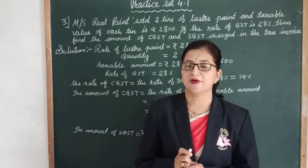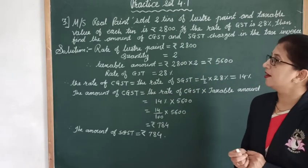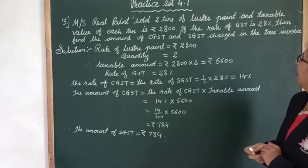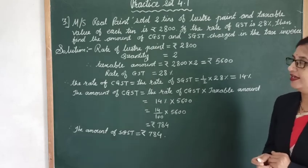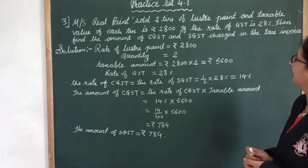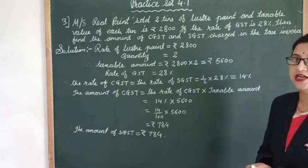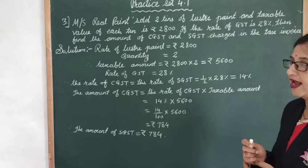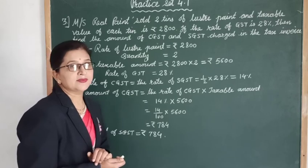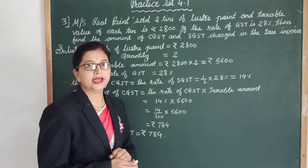We learn the example from practice set 4.1. The example is: Mrs. Real Paint sold 2 tins of lustre paint and the taxable value of each paint is 2800 rupees. If the rate of GST is 28%, then find the amount of CGST and SGST charged in the tax invoice.